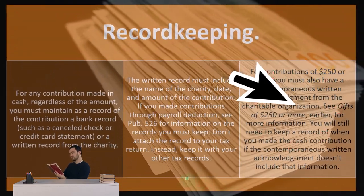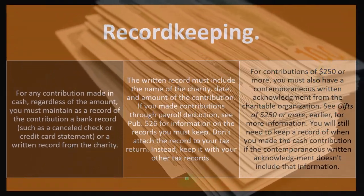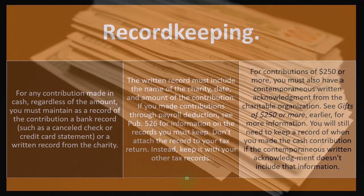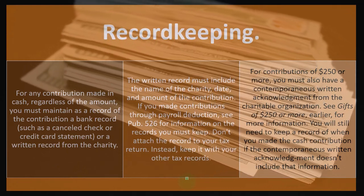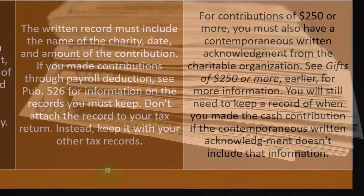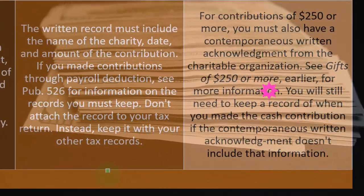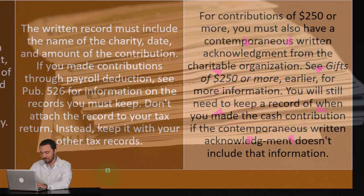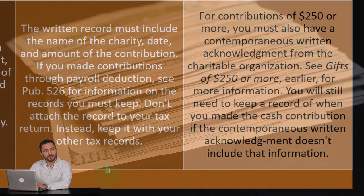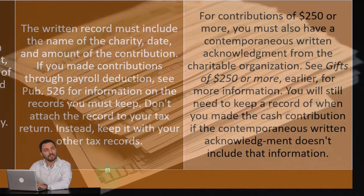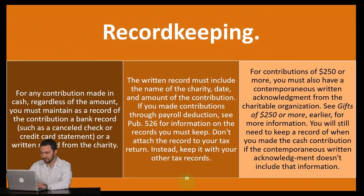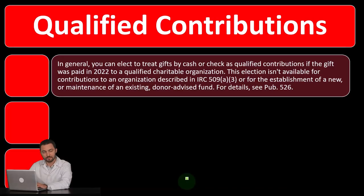For contributions of $250 or more, you must also have a contemporaneous written acknowledgement from the charitable organization — see the gifts of $250 or more section discussed earlier. You will still need to keep a record of when you made the cash contribution if the contemporaneous written acknowledgement doesn't include that information.